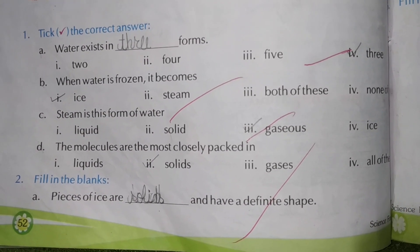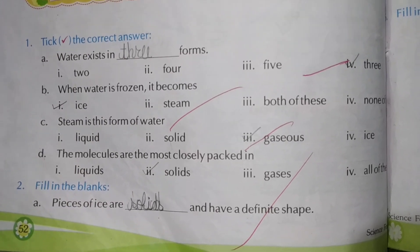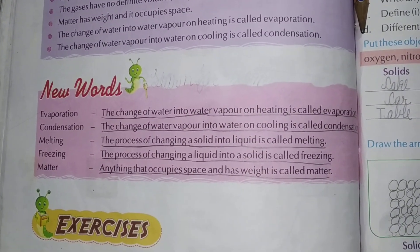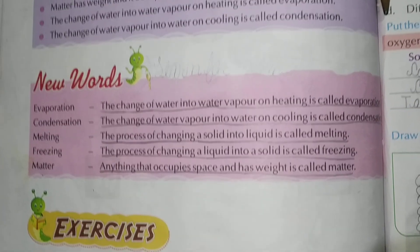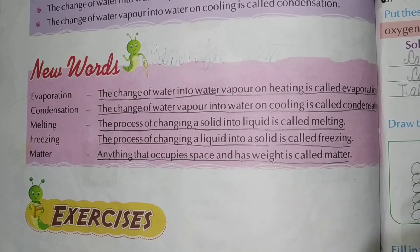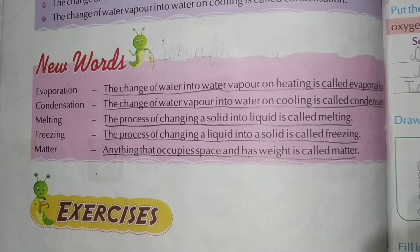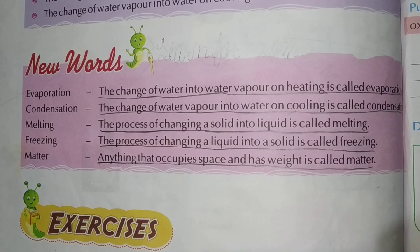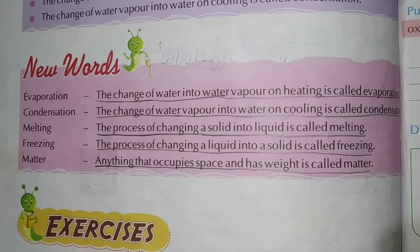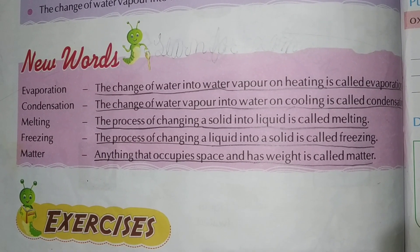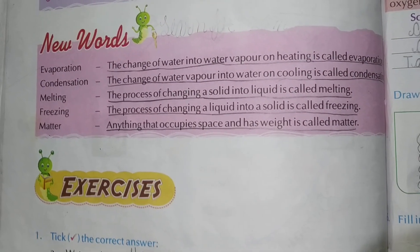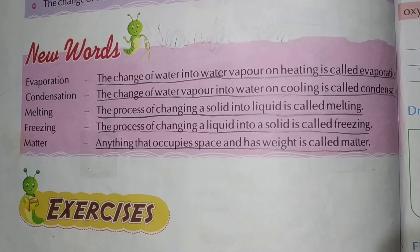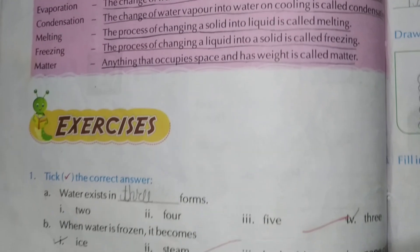New words. What is evaporation? Write on — learn for exam. The change of water into water vapor on heating is called evaporation. Condensation: the change of water vapor into water on cooling is called condensation. Melting: the process of changing a solid into liquid is called melting. Freezing: the process of changing a liquid into solid is called freezing. Matter: anything that occupies space and has weight is called matter.